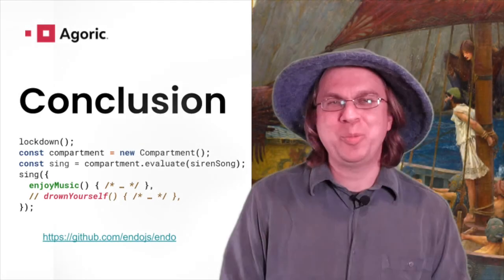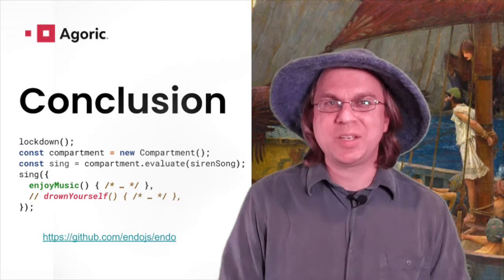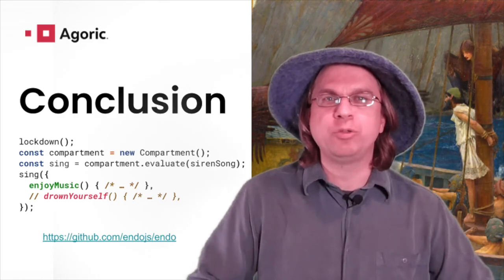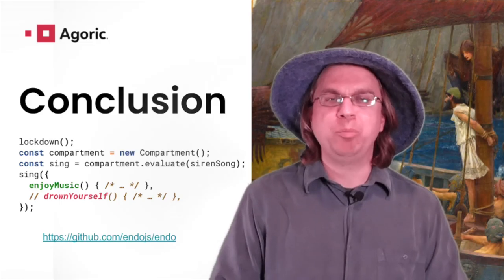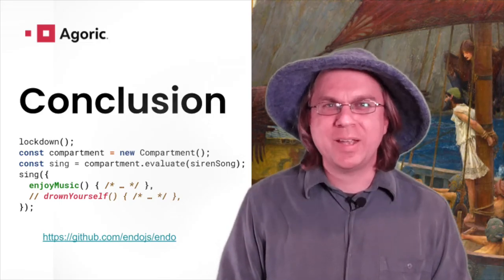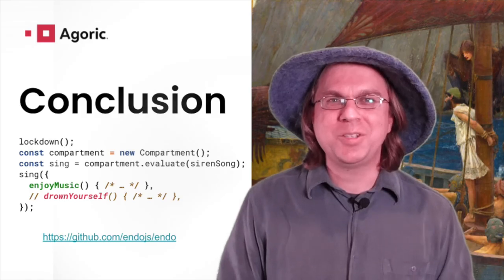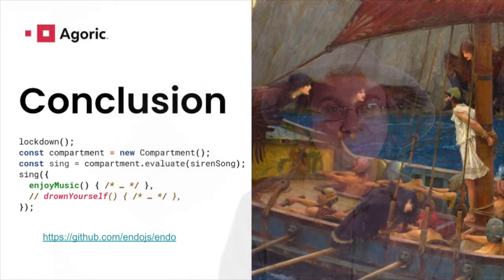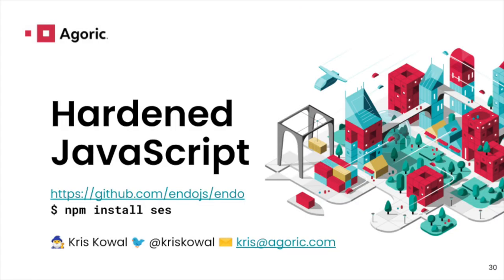The purpose of hardened JavaScript is to realize this Cambrian increase in software diversity by allowing a greater degree of cooperation between programs. So please, sail forth from here, listen to the siren song, and live to tell the tale. I'm Chris Kowal, an engineer with the good fortune of working with the incredible team at Agoric, and you can find the hardened JavaScript shim in the Endo project repository on GitHub, or by simply installing SES.